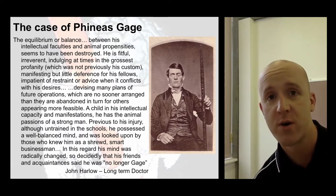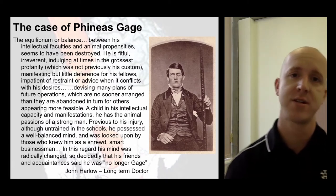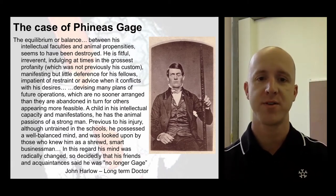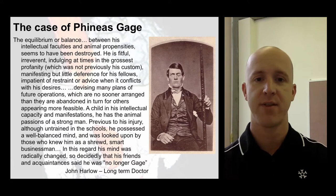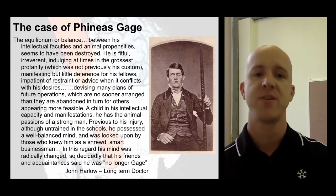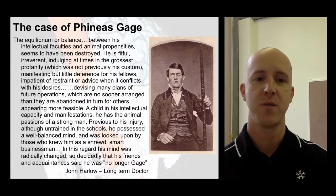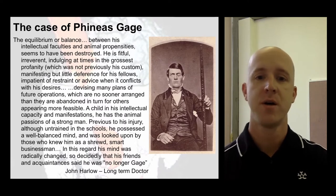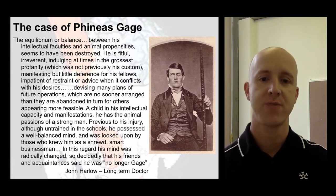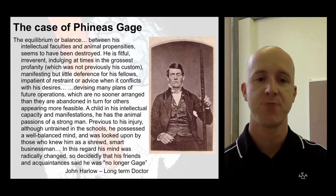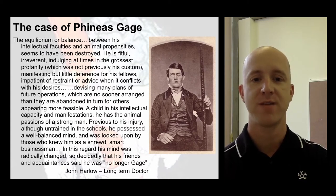This behaviour began to point to the idea that perhaps the frontal lobe is responsible for forming and persisting with plans, carrying them out, and controlling more primal urges — trying to find an appropriate outlet for them — and just controlling behaviour in terms of swearing, outbursts, and anger. Previous to his injury, although untrained in school, he possessed a well-balanced mind and was looked upon as shrewd and smart as a businessman. In this regard, his mind was radically changed, so decidedly that his friends and acquaintances no longer saw Gage.